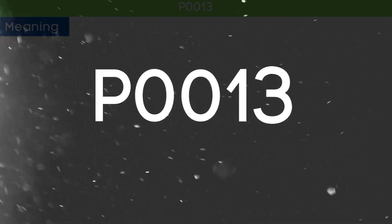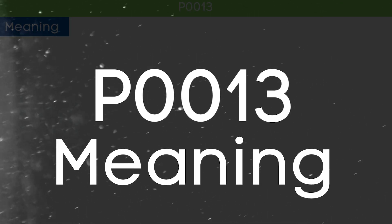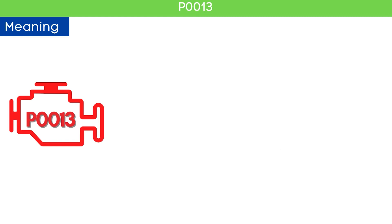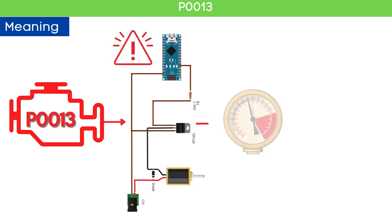First, let's understand what the P0013 code is. The P0013 code means that the ECM has detected a circuit issue with the solenoid actuator that directs oil pressure